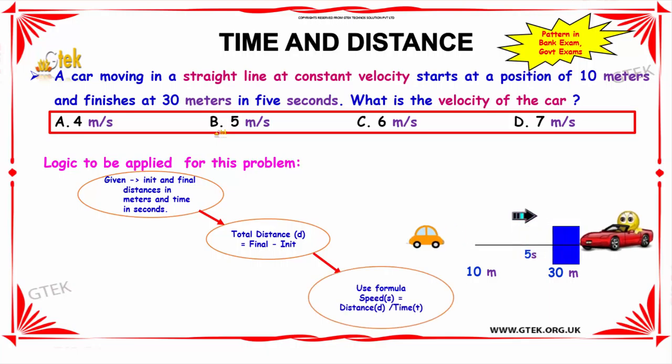The next question is, a car moving in a straight line at constant velocity starts at a position of 10 meters and finishes at 30 meters in 5 seconds. So what is the velocity of the car?